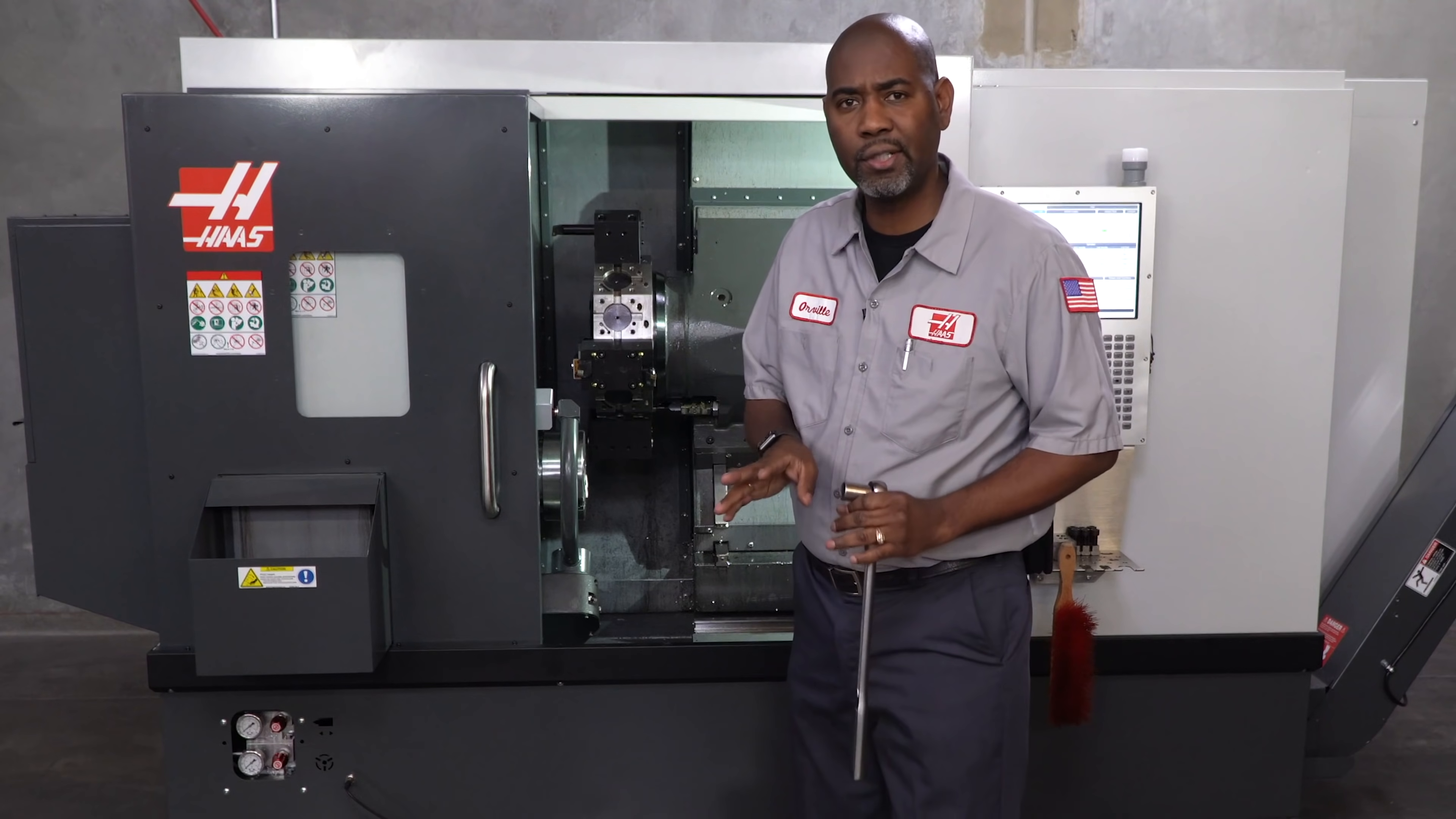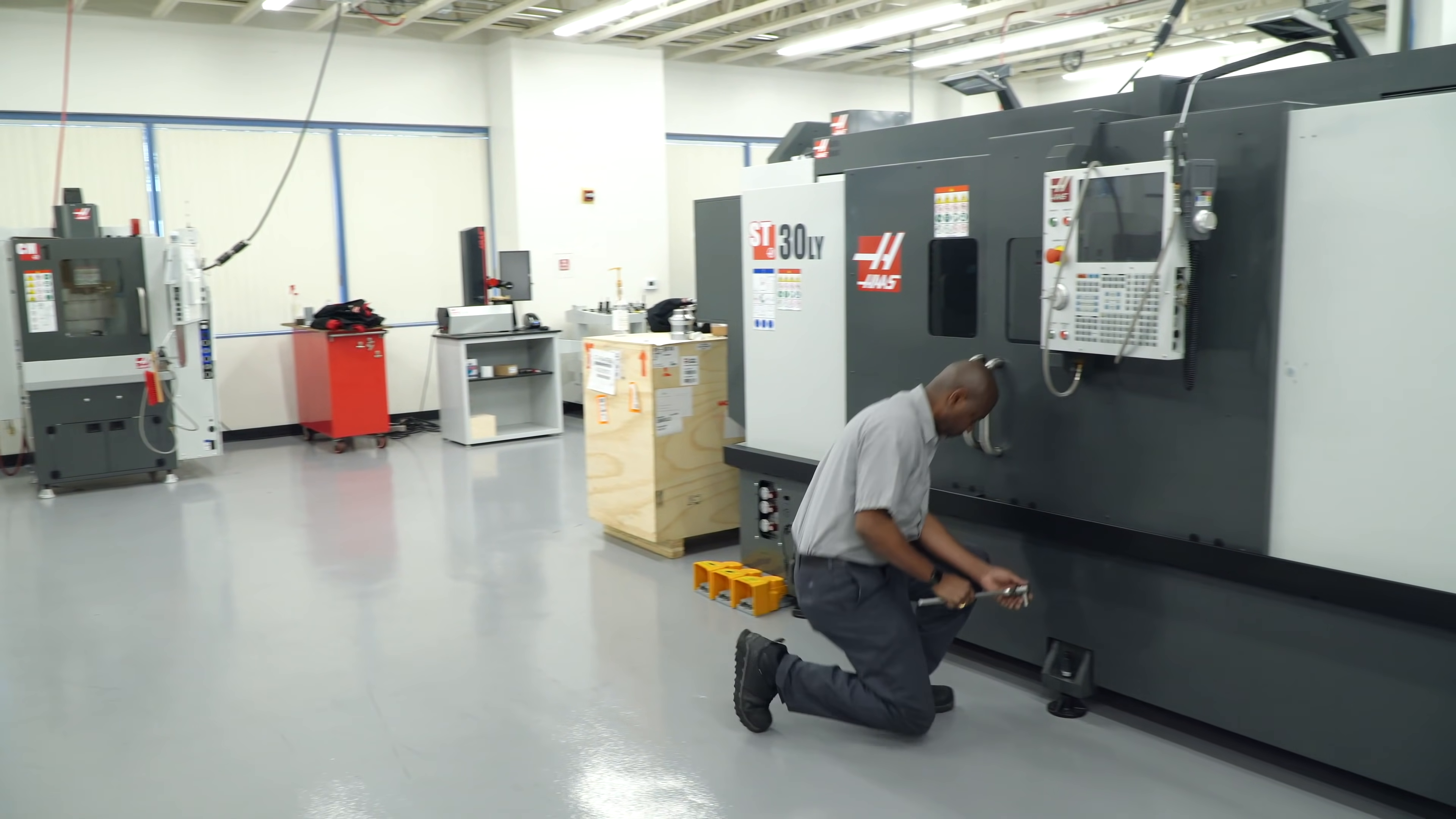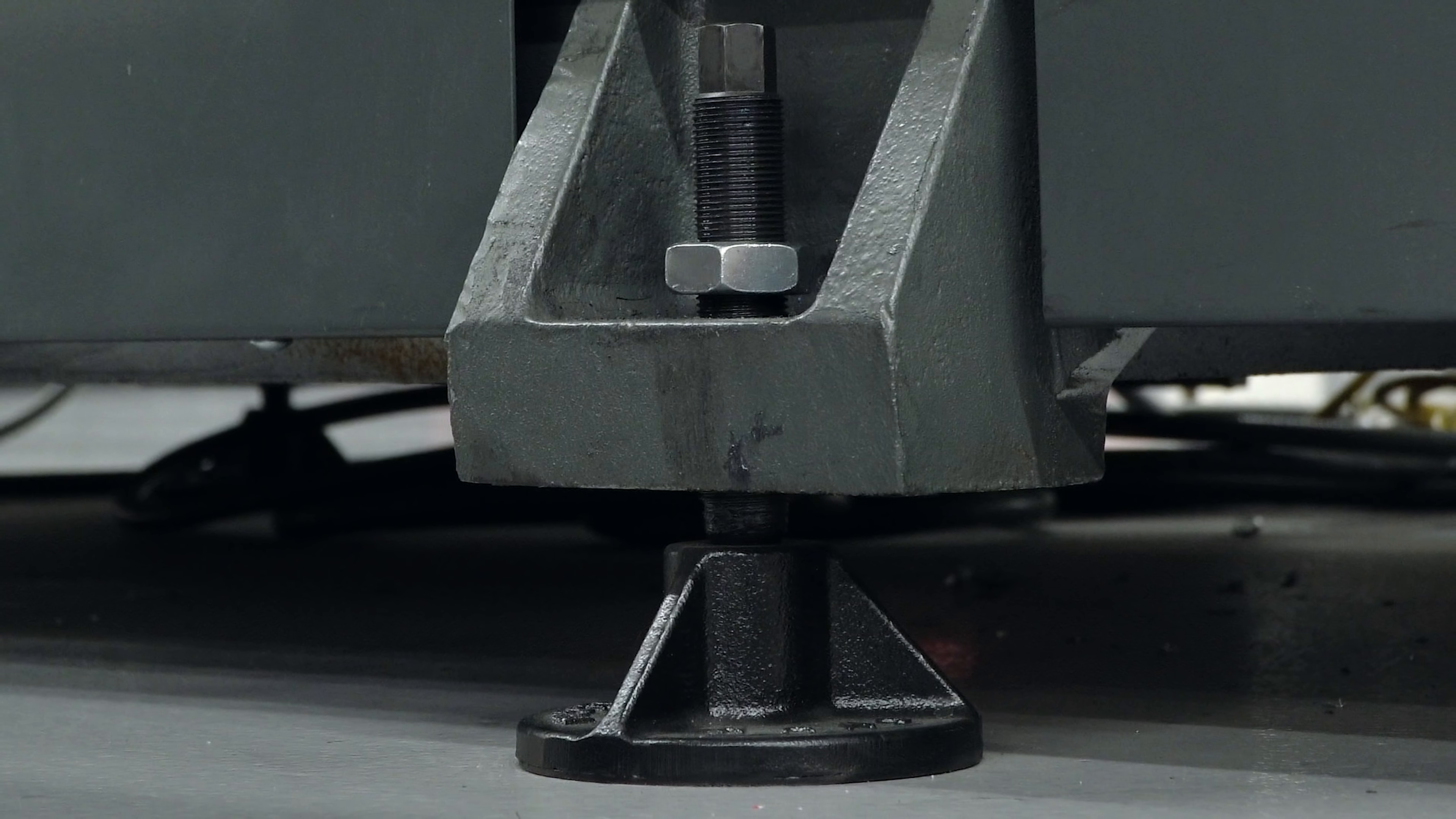Remember, up until now, machines with center leveling screws, those screws have not been touching their pads. For machines with center screws, we'll use the ratchet to turn the leveling screws about 10 degrees to apply pressure to the center pads front and rear.